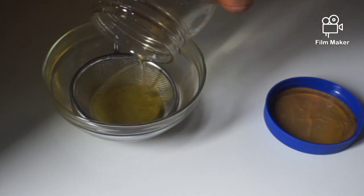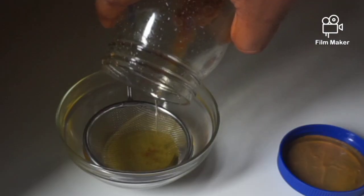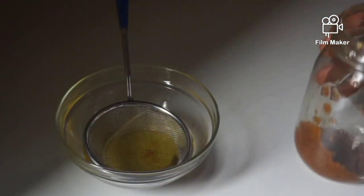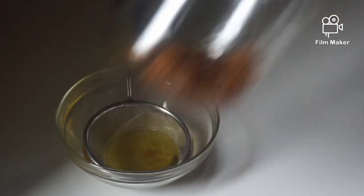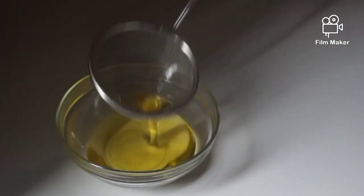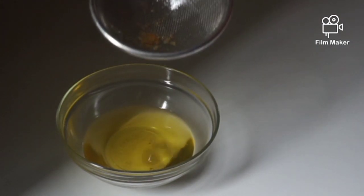You can also make use of the leftover fenugreek seed in the jar by pouring one cup of water into the fenugreek and allow it to soak for some time. You can use it as pre-poo and as hair spray.